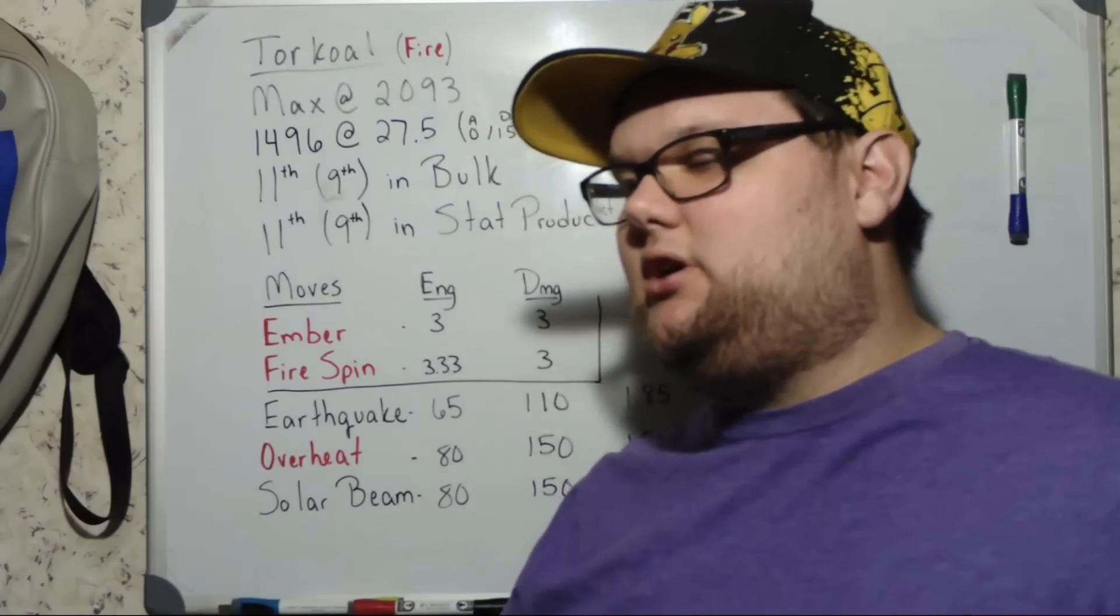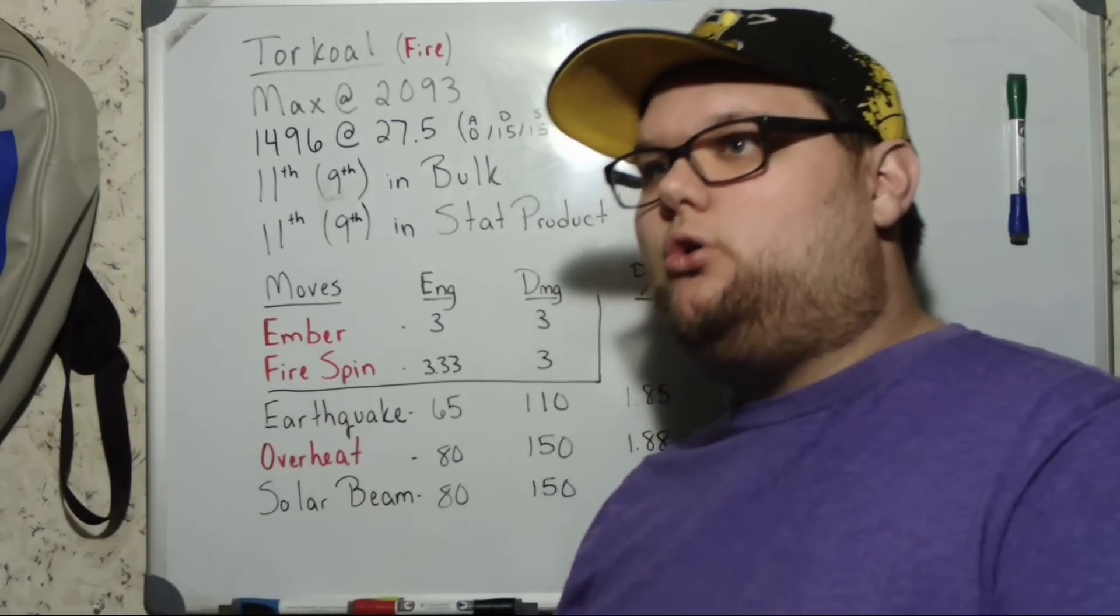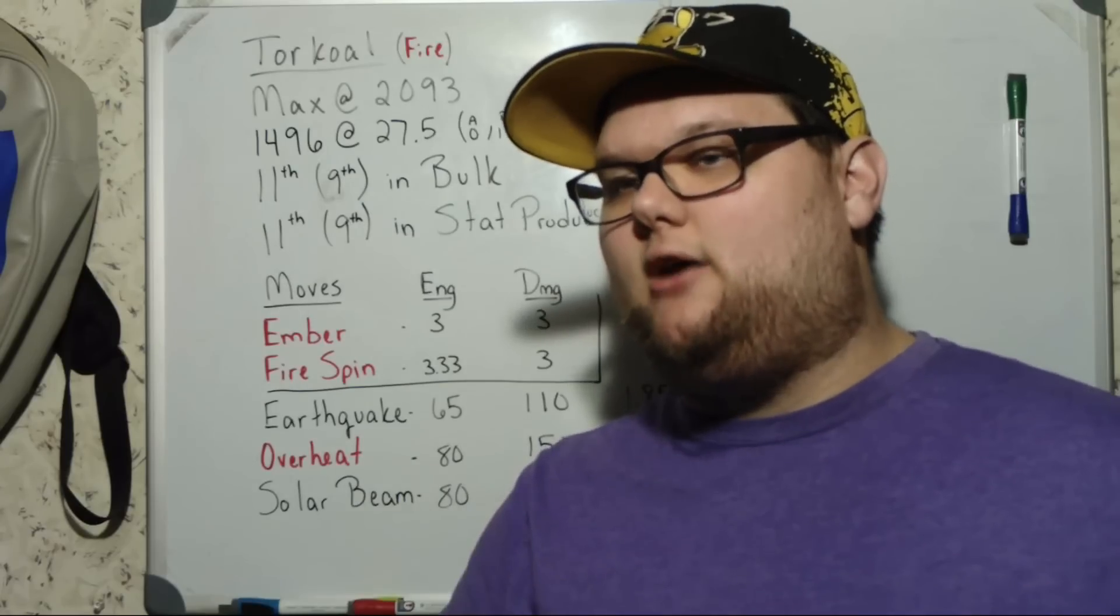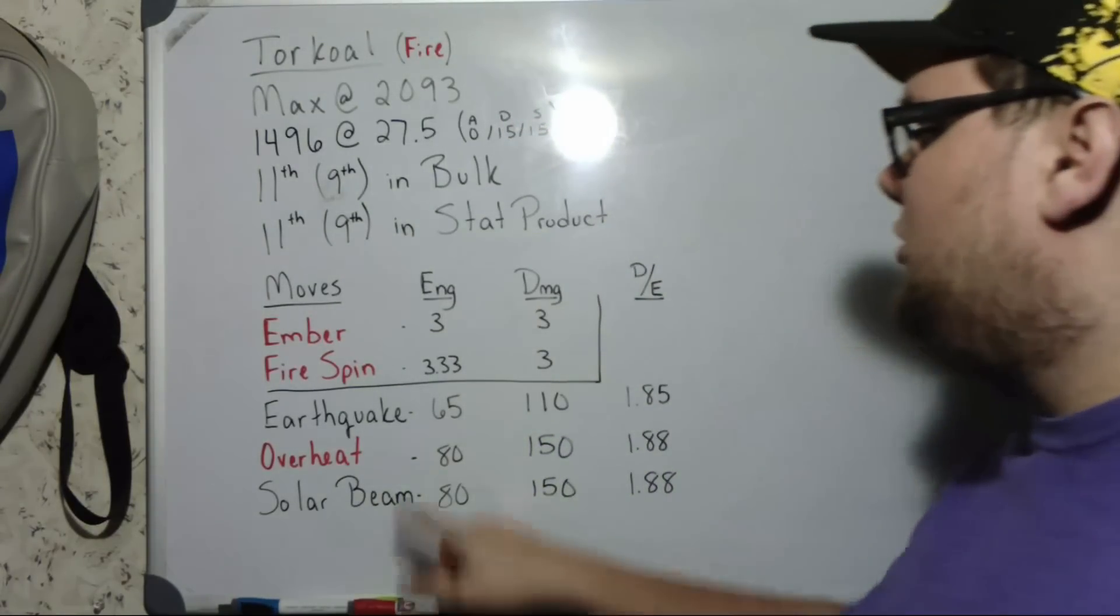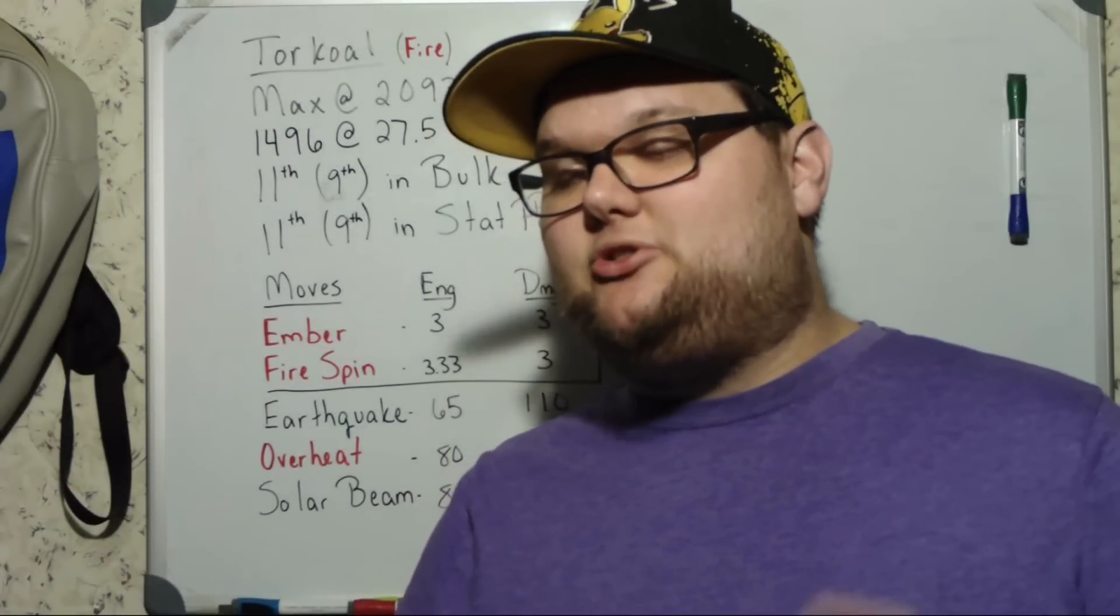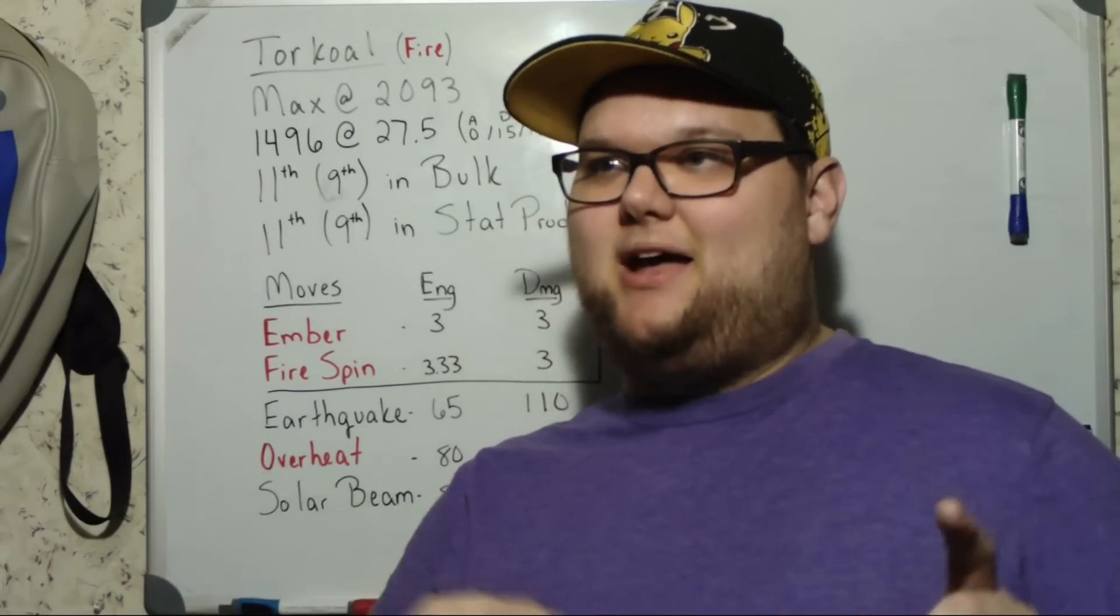Basically the water types that are going to directly counter Torkoal actually end up having a hard time getting around Solar Beam. So you actually have a move to cover your weakness, and then you have Earthquake which actually helps cover fire types. So you can actually win fire type matches as well. Pretty interesting moveset.